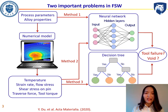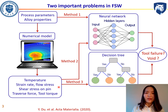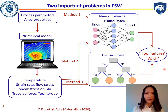However, the prediction accuracy from the direct approach is average. Therefore, we employ a numerical model to calculate six computed variables: temperatures, strain rate, flow stress, shear stress on the tool pin, traverse force, and tool torque. We then feed them into a neural network and decision tree to predict tool failure and void formation. We found that using this combined method yields very high prediction accuracy.